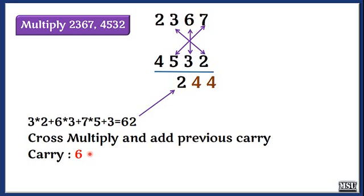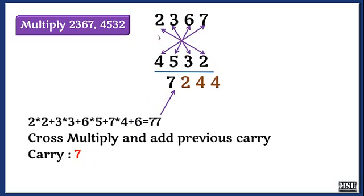And then next step, I am going to perform 4 cross multiplications. So 2 into 2, 4 into 7, here also the cross multiplication, 3 into 3, and then 6 into 5 plus the carry. The result is 77 and then the carry is also 7.